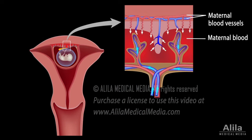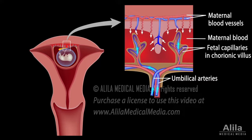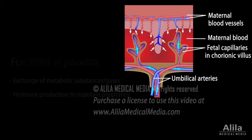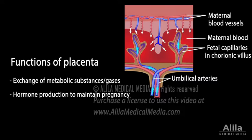Fetal blood travels to the placenta via two umbilical arteries. The exchange between maternal and fetal blood takes place in the capillaries within chorionic villi. Fetal waste, such as carbon dioxide, moves into maternal blood, while nutrients and oxygen move into fetal blood and travel back to the fetus via the single umbilical vein.